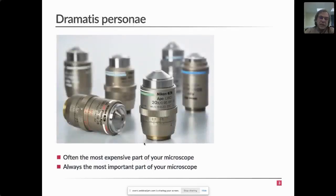So these are the characters of our play, microscope objective lenses. They may or may not look like what you have in your lab. They come from different manufacturers, but they all have at least two things in common. Often they are the most expensive part of your microscope, especially if you have purchased a few high-end immersion systems. They may be in total costing you as much as the rest of the microscope system put together.